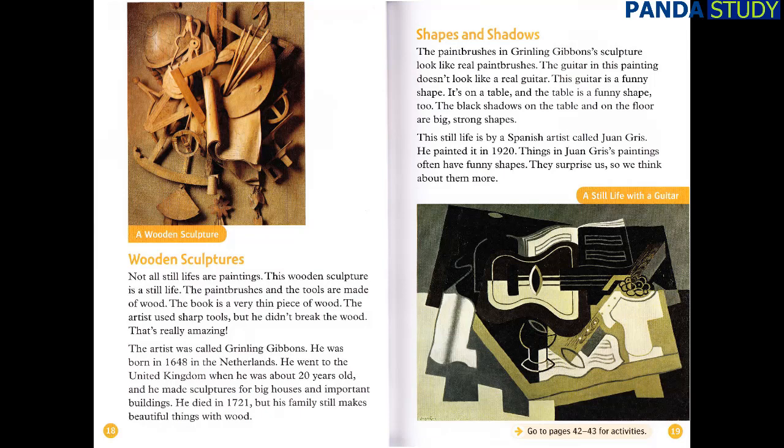Not all still lifes are paintings. This wooden sculpture is a still life — the paintbrushes and the tools are made of wood, and the book is a very thin piece of wood. The artist used sharp tools, but he didn't break the wood. That's really amazing! The artist was called Grinling Gibbons. He was born in 1648 in the Netherlands. He went to the United Kingdom when he was about 20 years old, and he made sculptures for big houses and important buildings. He died in 1721, but his family still makes beautiful things with wood.